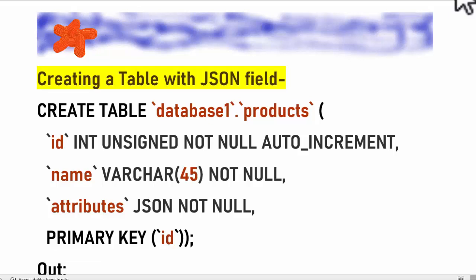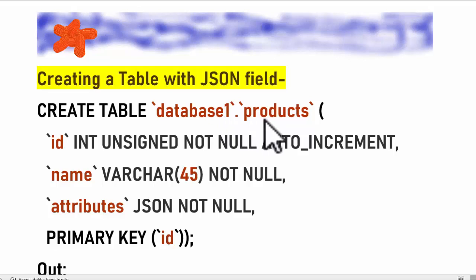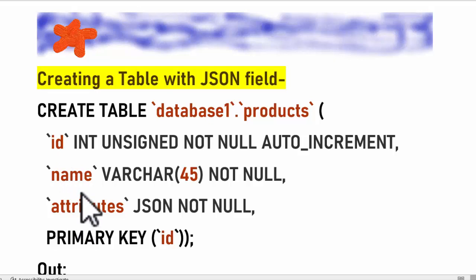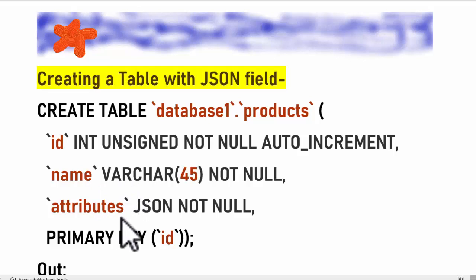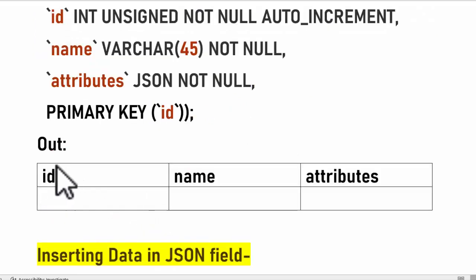Let's apply what we have learned so far — we will create a table with a JSON field. To create a table, we use the CREATE TABLE statement, then schema name dot table name. The table name is 'products'. We are making a table of products with three columns: id, name, and attributes. The data type of id is integer, name is VARCHAR, and the third column attributes has the JSON data type. This will create the table with all three columns and their respective data types.